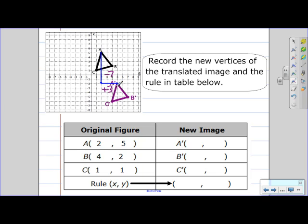So let's take a look at our locations of our points. So A prime is at five, negative two. B prime is at seven, negative five. And C prime is at four, negative six.